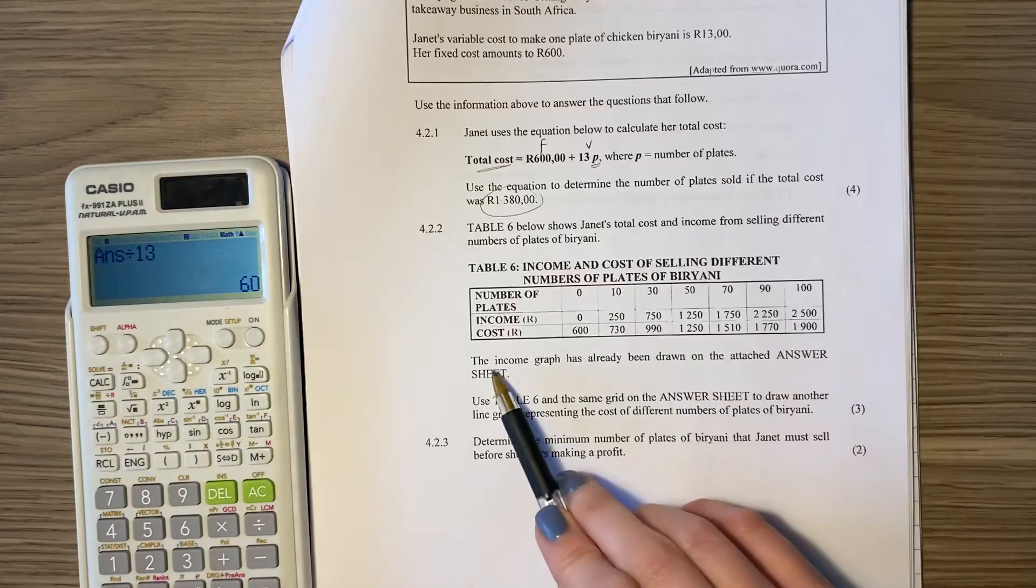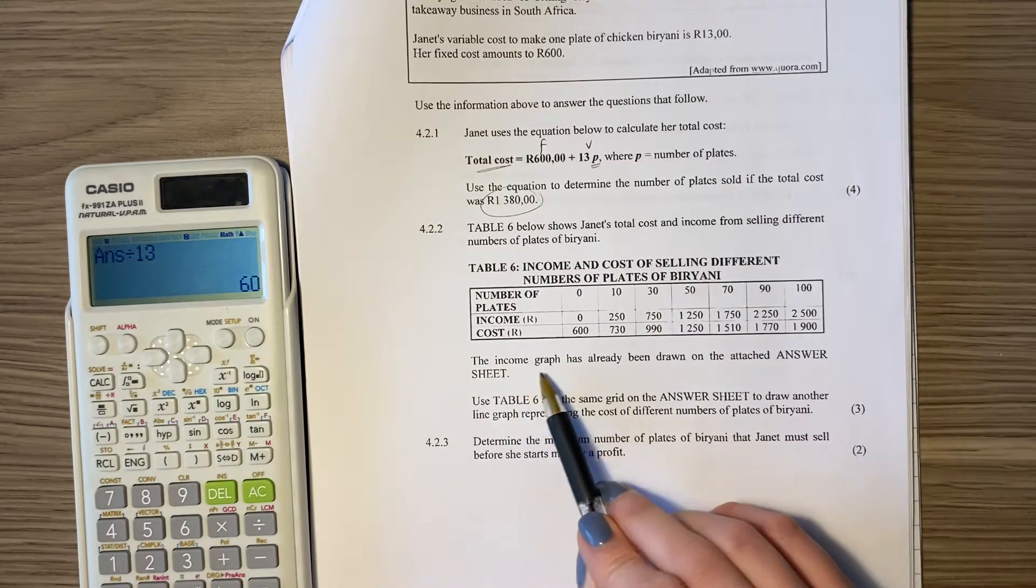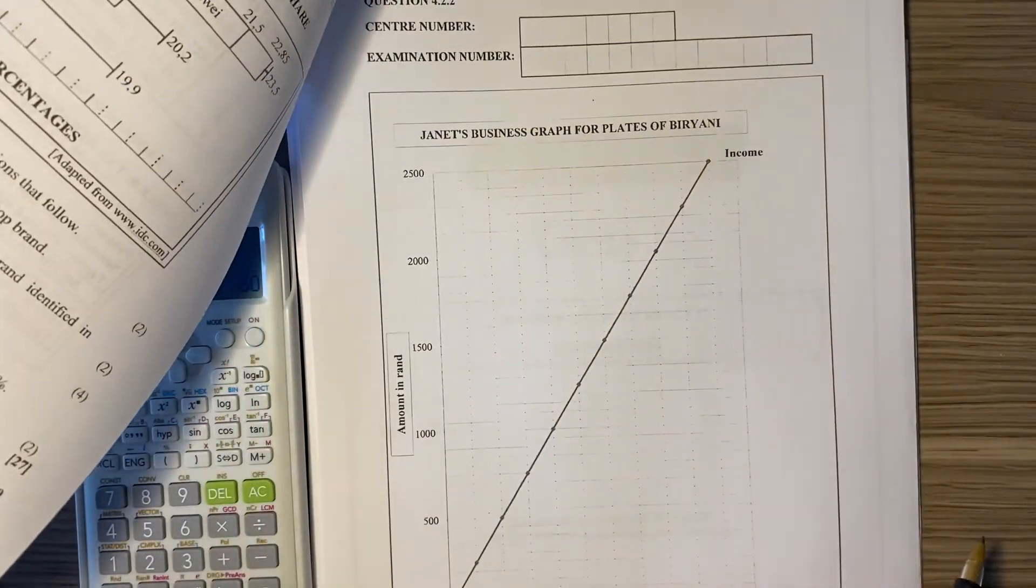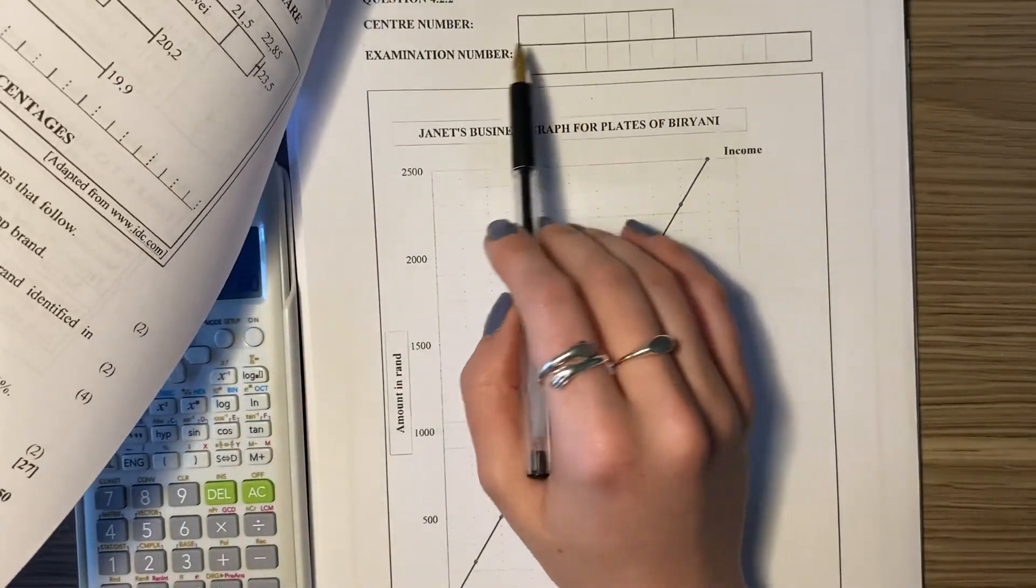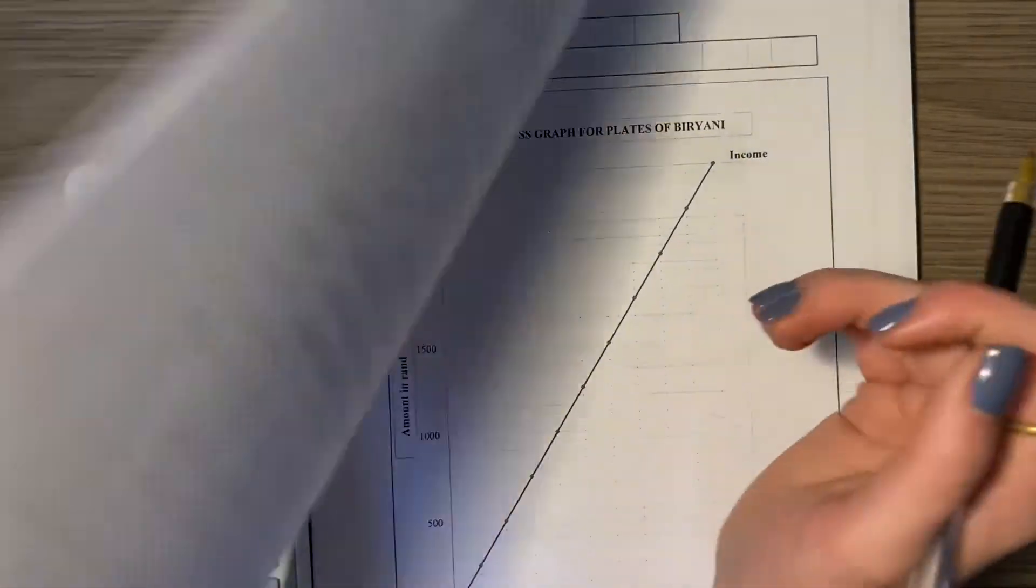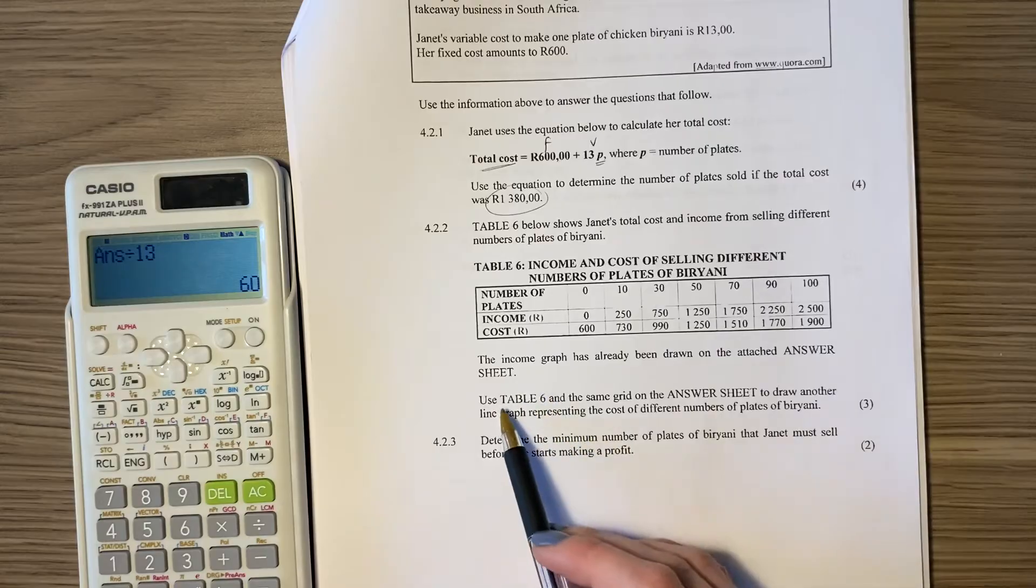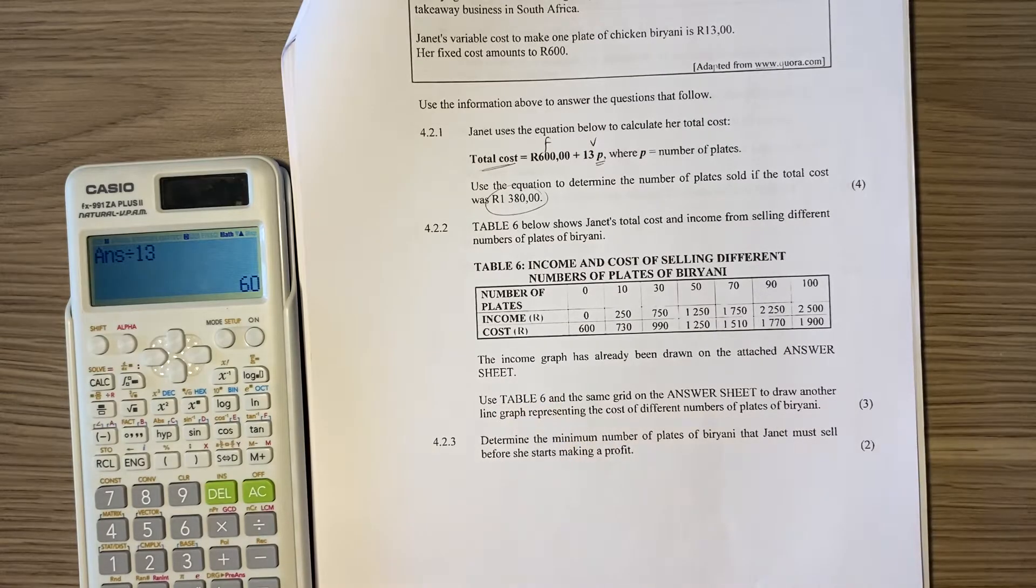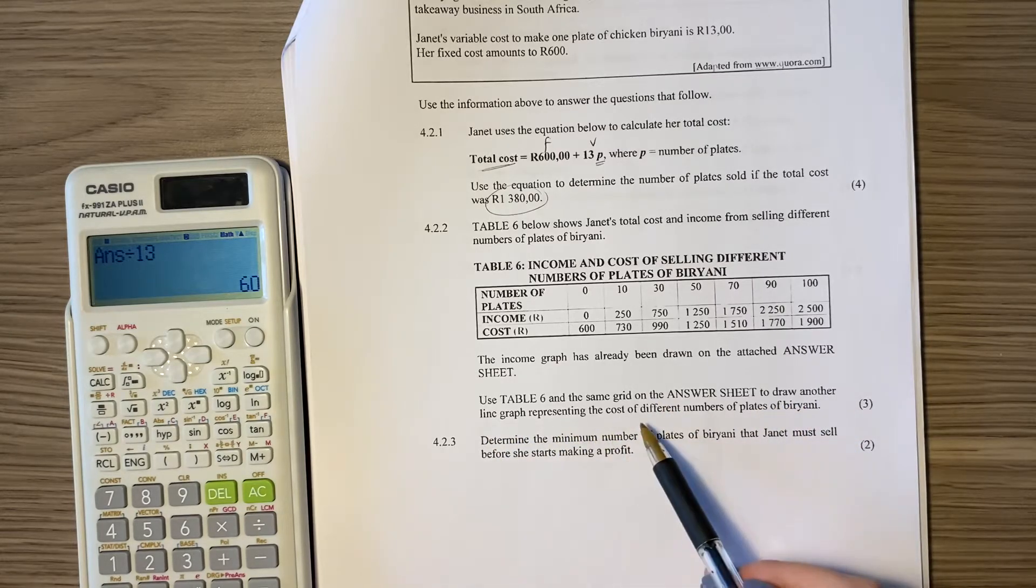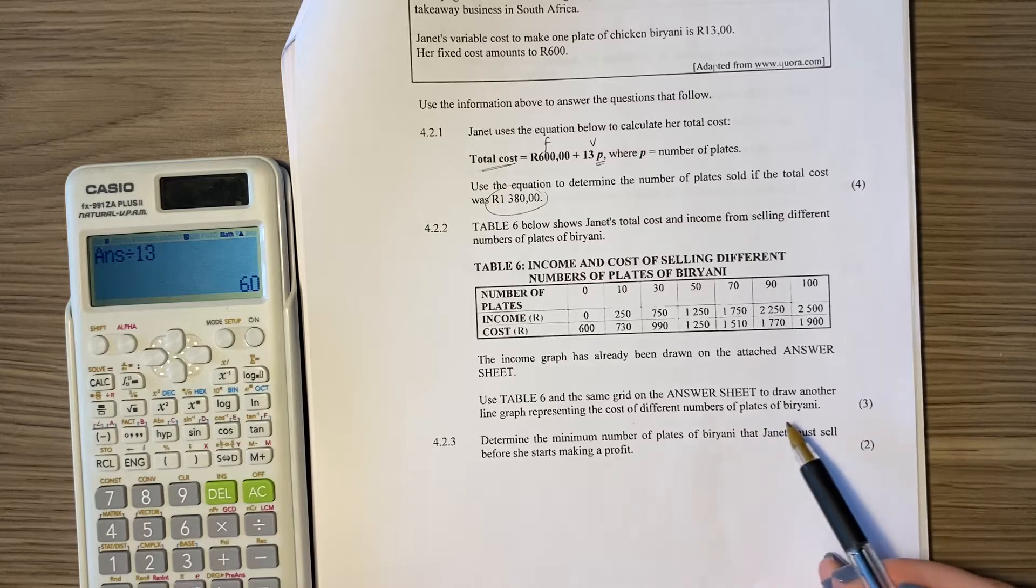So the question then says the income graph has already been drawn on the attached answer sheet. So the answer sheet is here at the back. Please when you see this make sure you put your center number in and your exam number. Don't miss anything, but you're going to use this to answer the question. So then it says use table six and the answer grid and the same grid on the answer sheet to draw another line graph representing the cost of different numbers of plates of briyani.